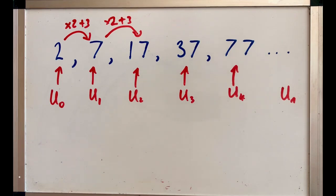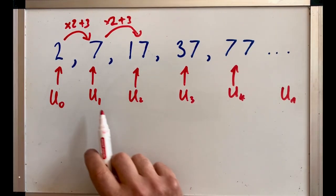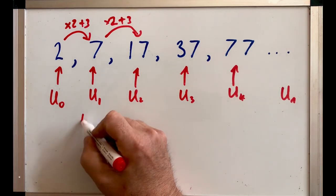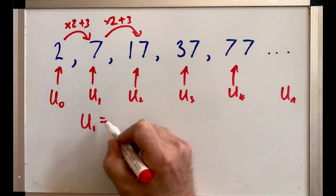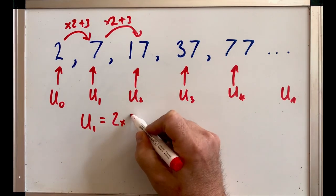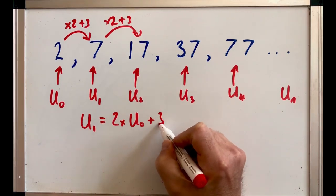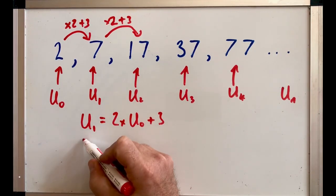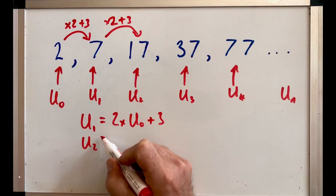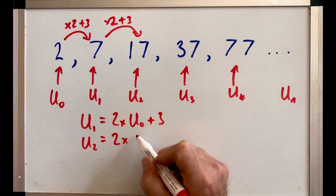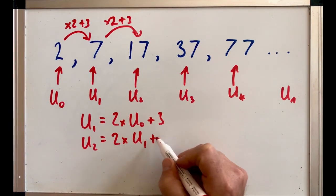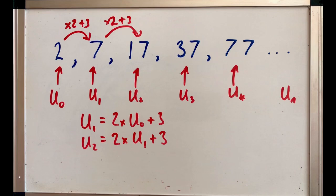Now, if you look at these, you can see that to get from U₀ to U₁, so U₁ is just 2 times U₀ plus 3. To get to U₂, that's 2 times U₁ plus 3, and so on.